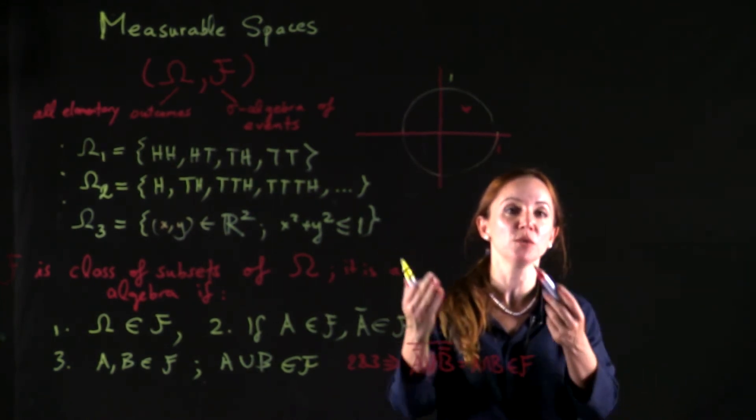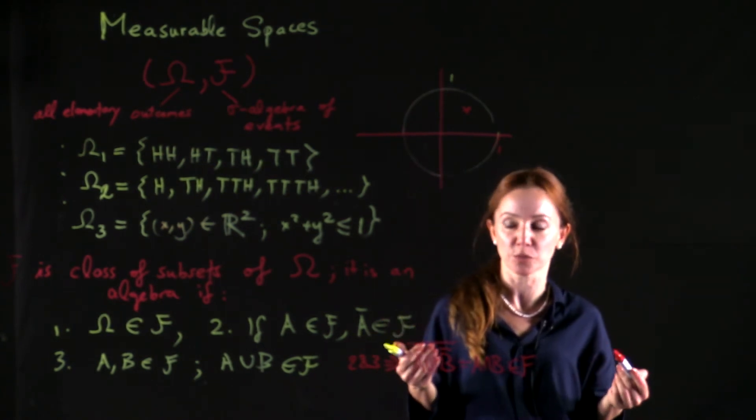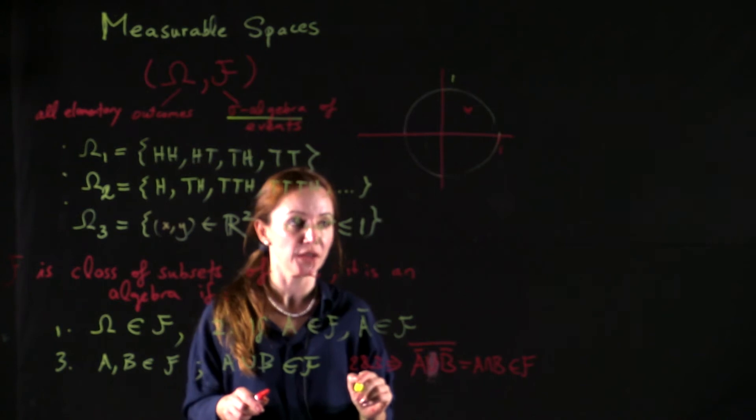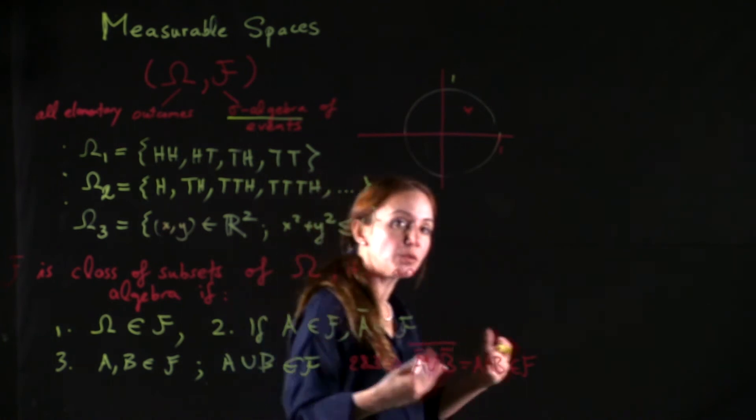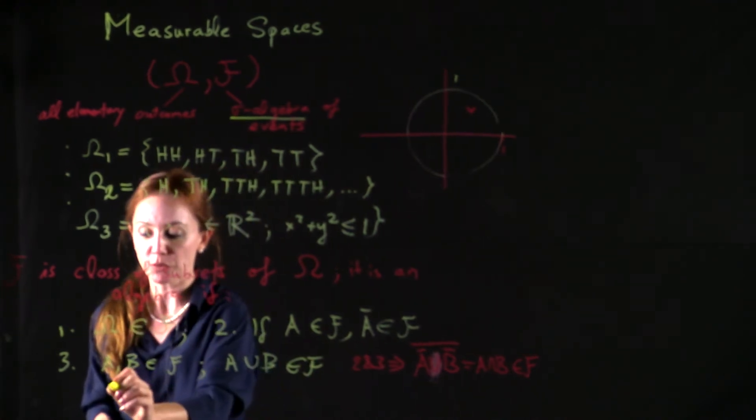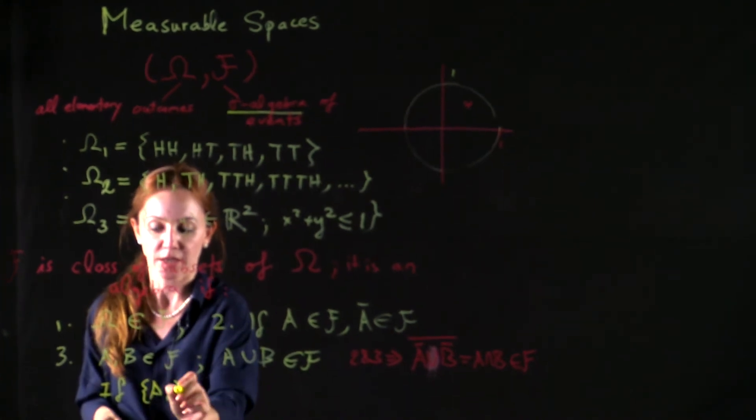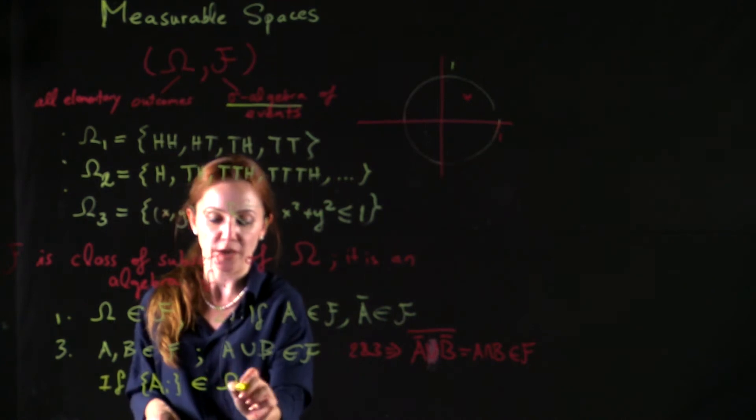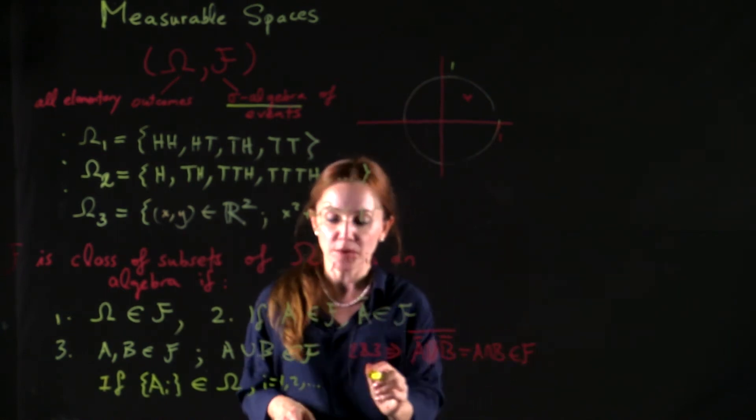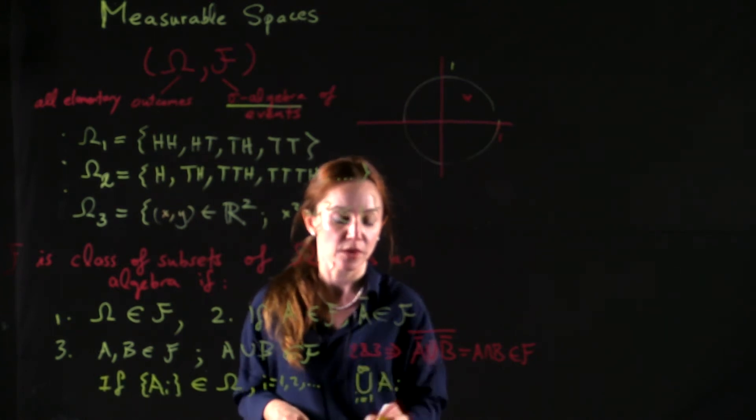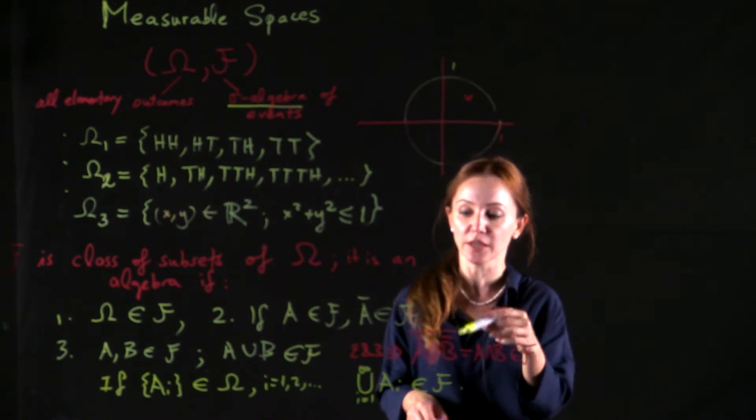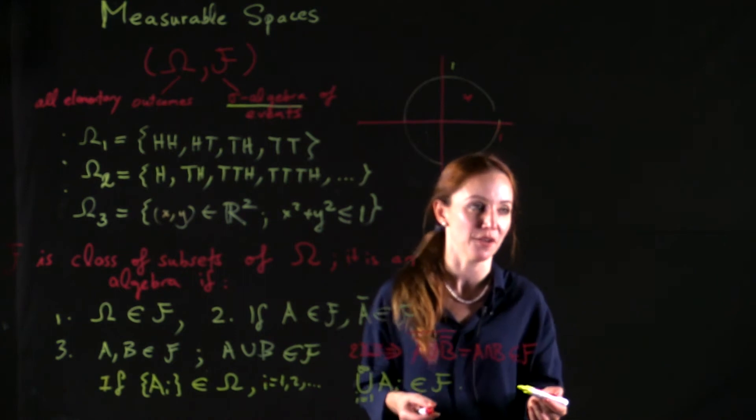With these three properties, the class of subsets of omega is an algebra, but more often, especially when we deal with continuous sample spaces, we will need more than an algebra. We will need F to be a sigma algebra. So we need to extend these three requirements to include a countable number of unions or intersections.